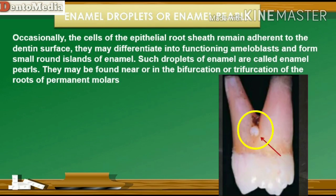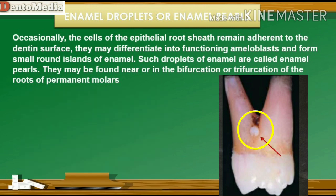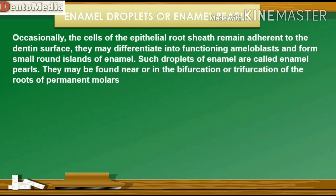Occasionally, the cells of the epithelial root sheath remain adherent to the dentin surface. They may differentiate into functioning ameloblasts and form small round islands of enamel called enamel droplets or enamel pearls. They may be found near or in the bifurcation or trifurcation of the roots of permanent molars.